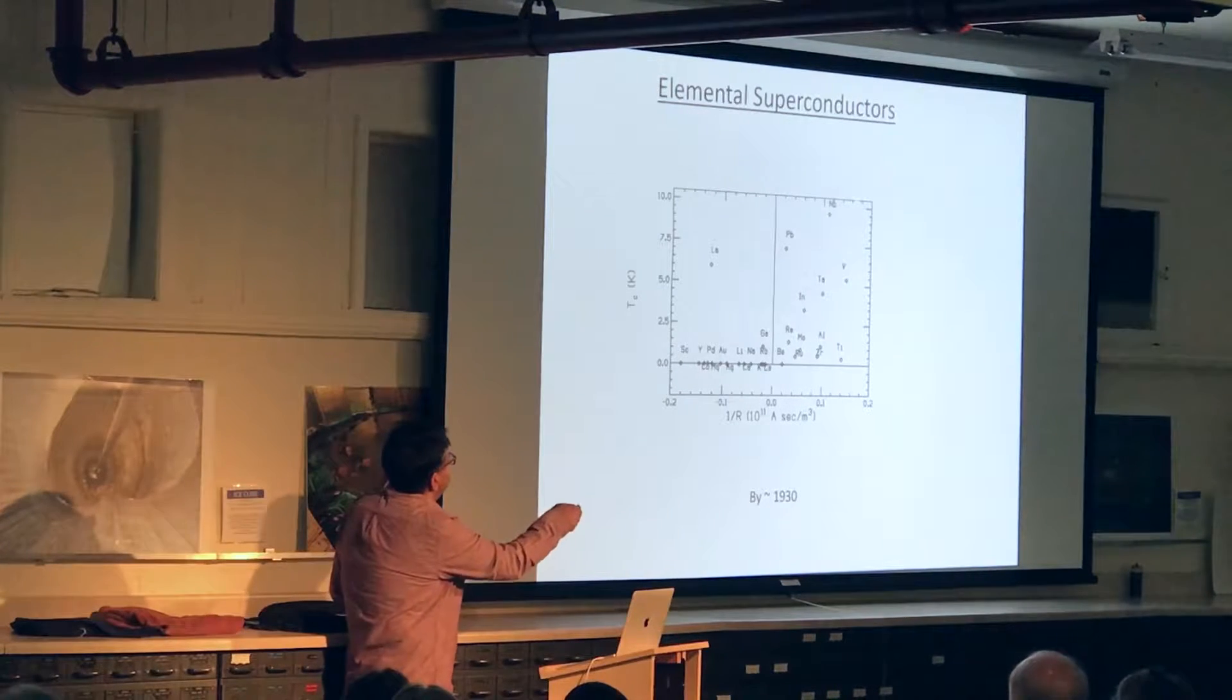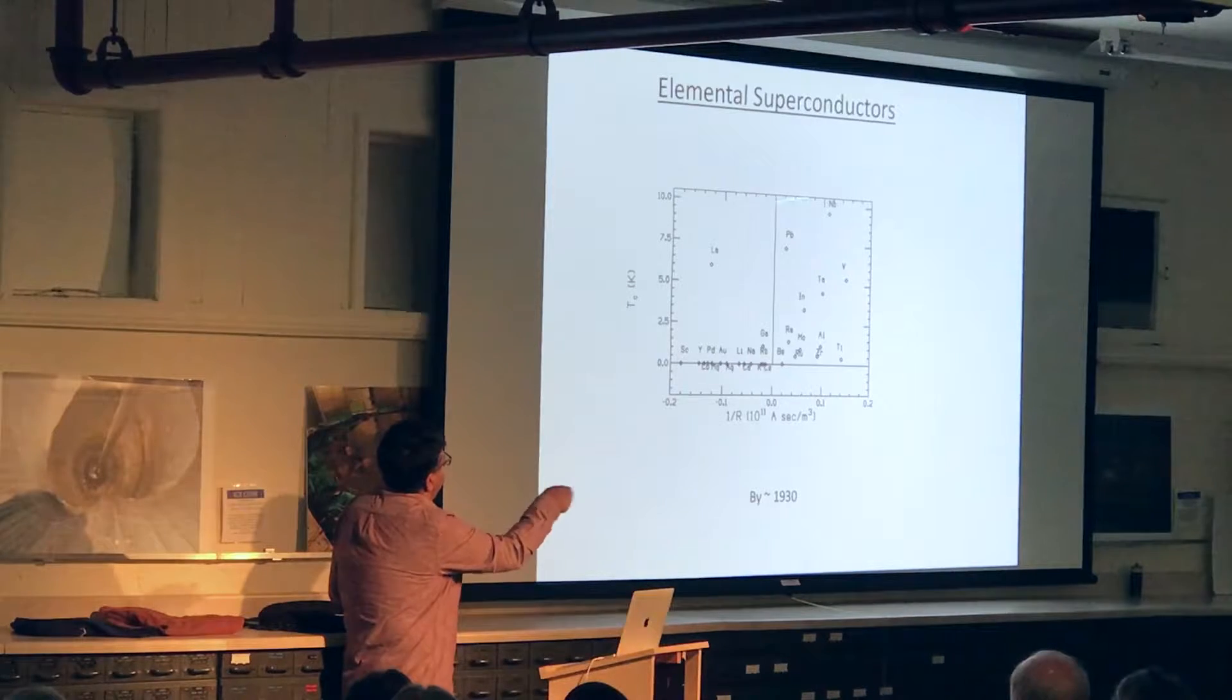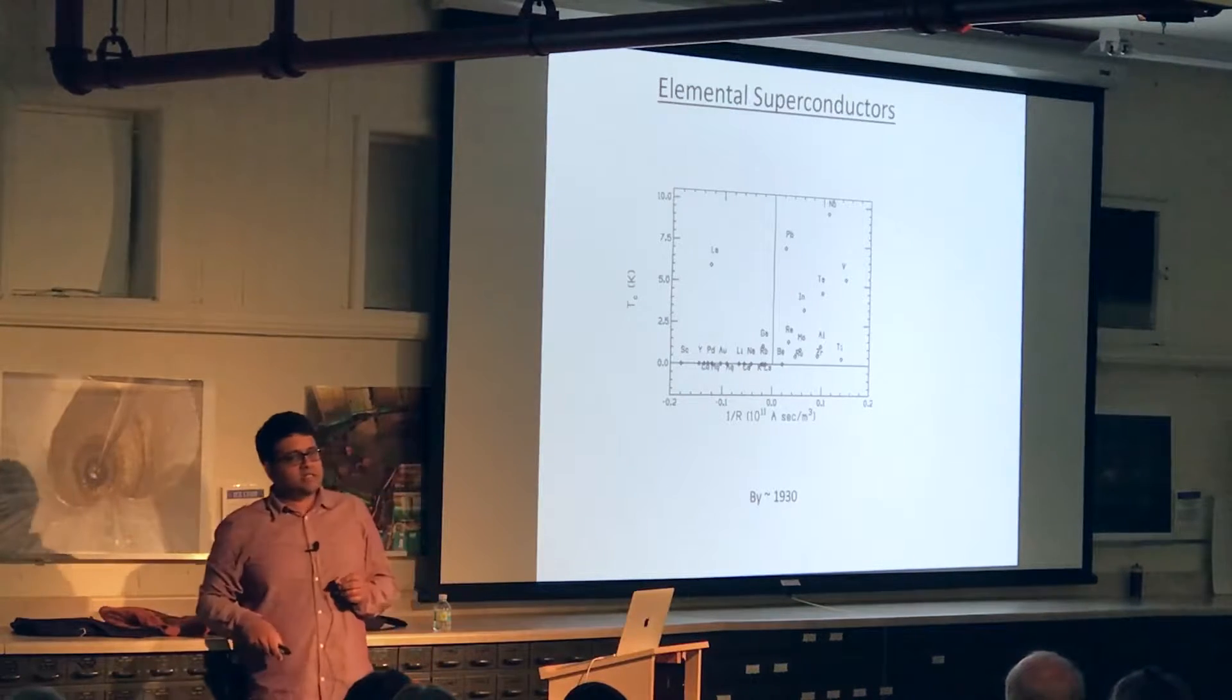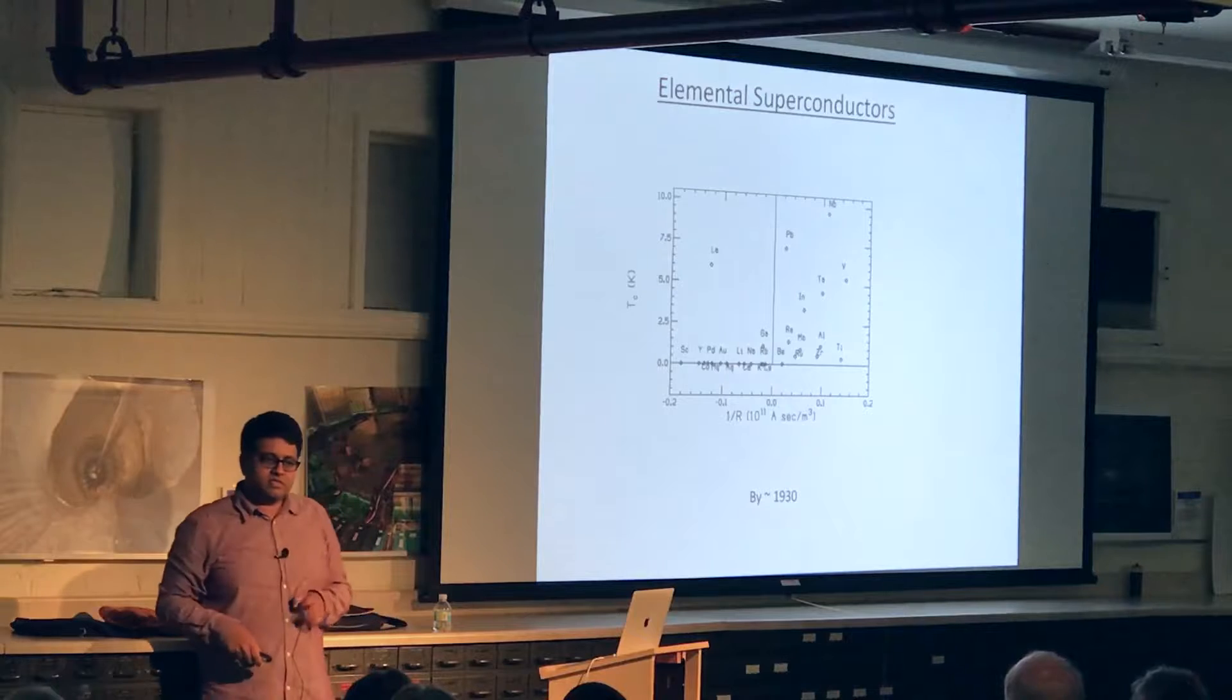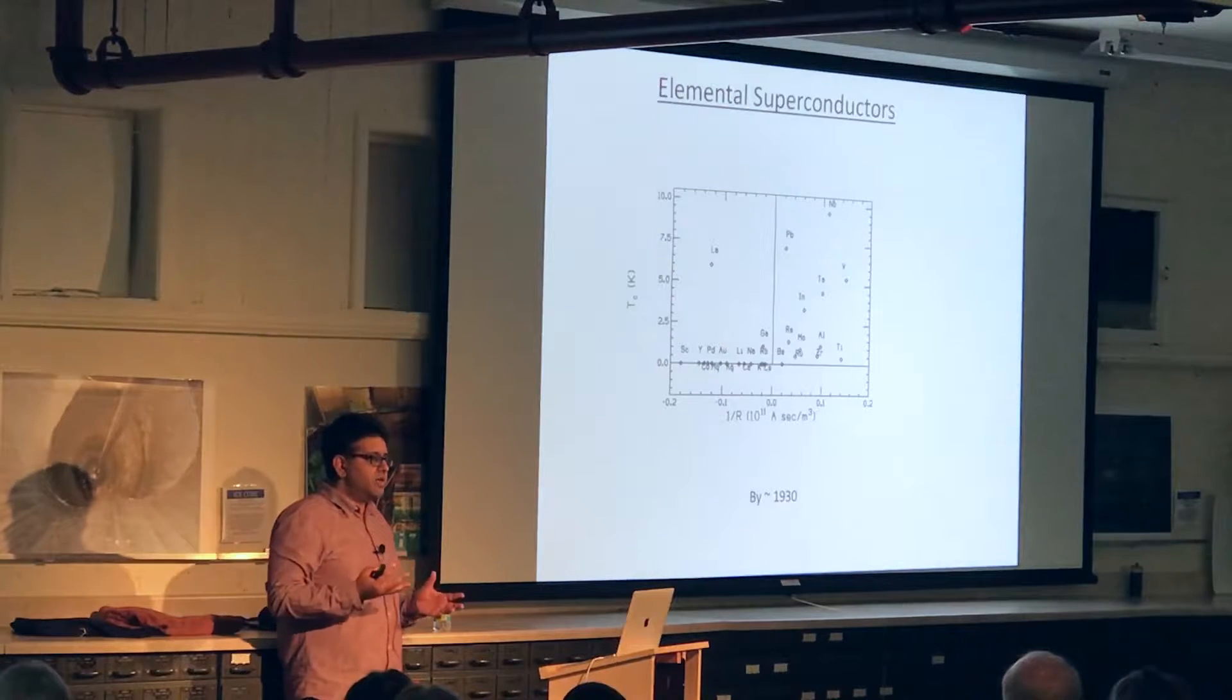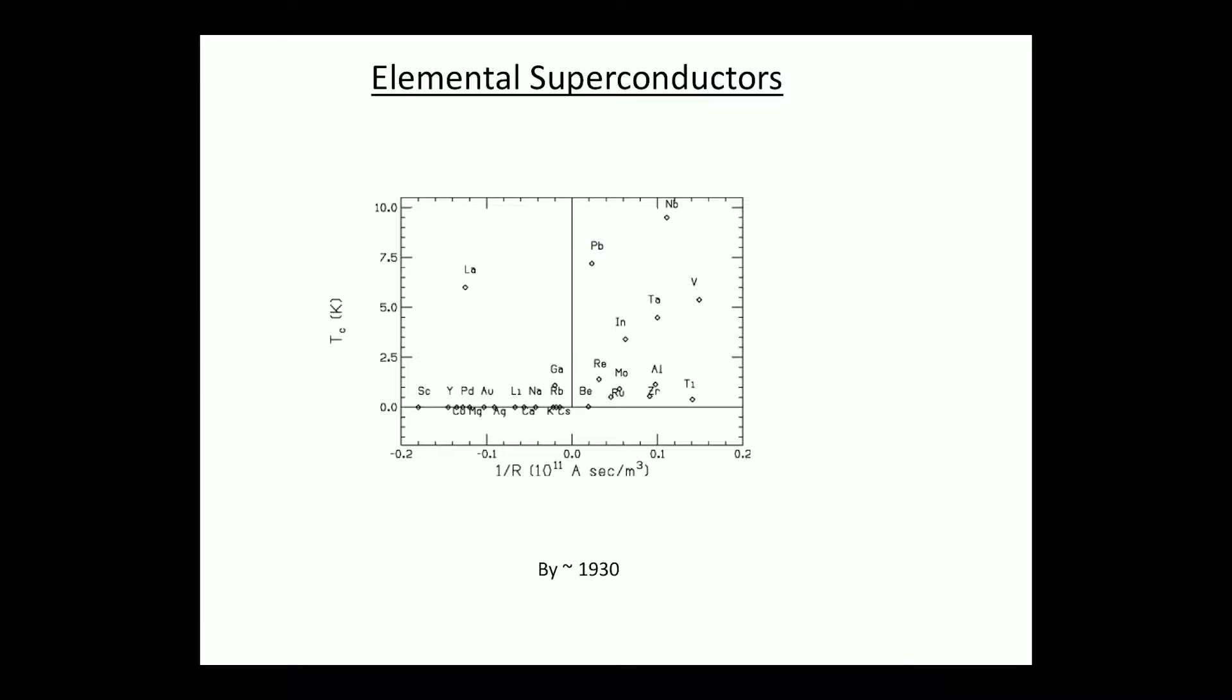And among the elemental metals you see niobium up there at about 9 Kelvin has among the highest superconducting transition temperatures, which is the reason why niobium and compounds that contain niobium are what is used to make superconducting magnets that are used in things like MRIs.